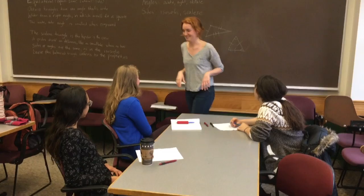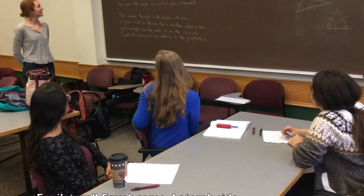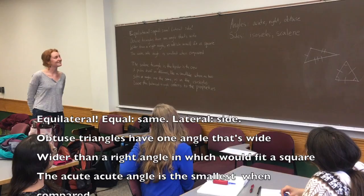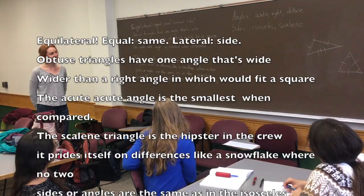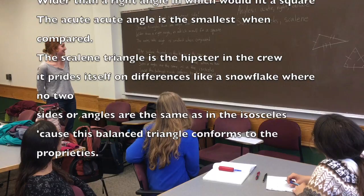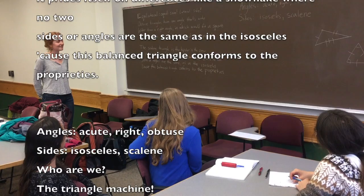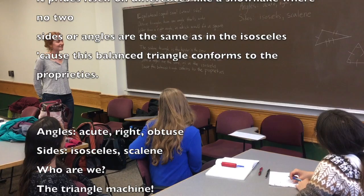Now we're going to learn a chant to help us remember what we learned today. Equilateral, equal, same, lateral side. Obtuse triangles have one angle that's wide — wider than our right angle, in which would fit a square. The acute angle is smallest when compared. The scalene triangle is the hipster in the crew. It prides itself on differences, like the snowflake, where no two sides or angles are the same — as in the isosceles, because this balanced triangle conforms to the proprieties.